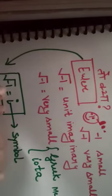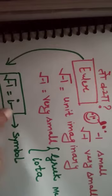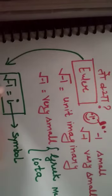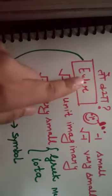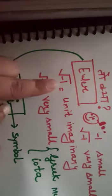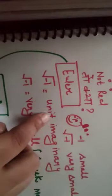Under root minus one, symbol i. So under root minus one i consider kiya. Under root minus one, unit imaginary.